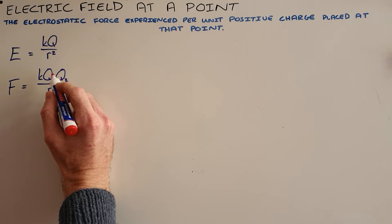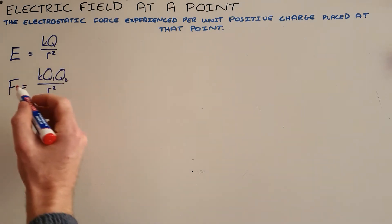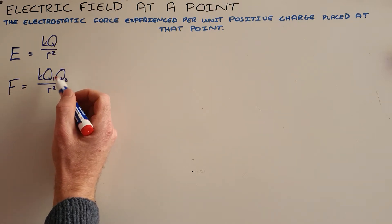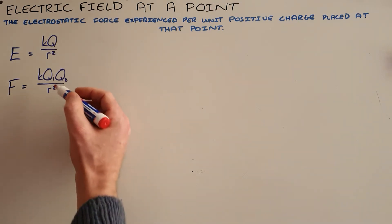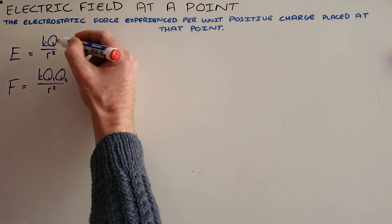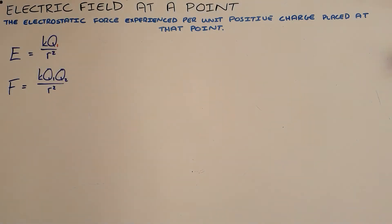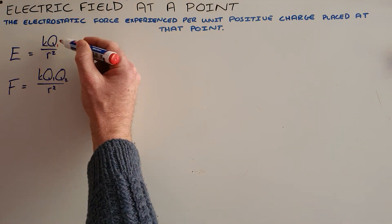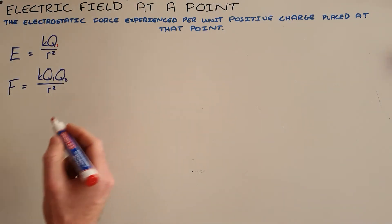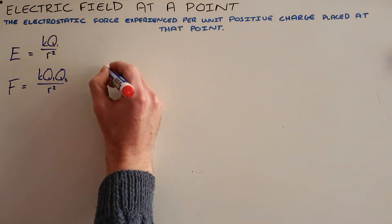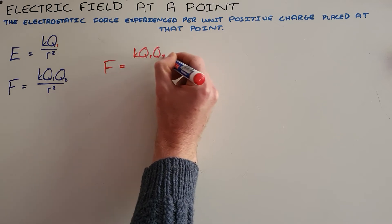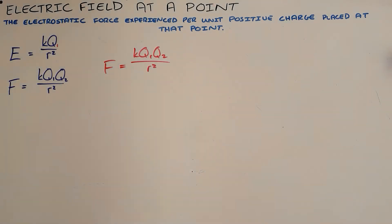Coulomb's law tells us that the force between any two charges, Q1 and Q2, is directly proportional to the magnitude of those charges and inversely proportional to the distance of separation squared. Our original formula for electric field tells us that the electric field around an object is directly proportional to the magnitude of that charge and inversely proportional to the distance of separation. What we can see is that Coulomb's law contains the expression for the electric field around one of those charges.